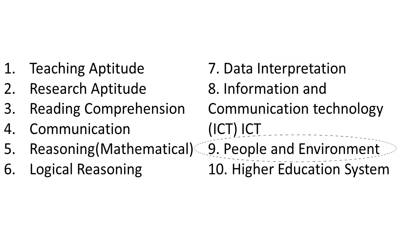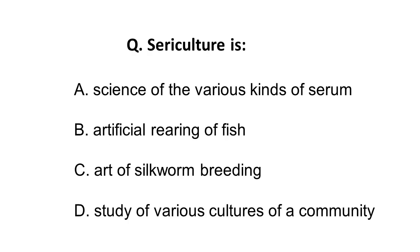The first question is: sericulture is — Option A: science of various kinds of serum; Option B: artificial rearing of fish — this is not sericulture, artificial rearing of fish is pisciculture; Option C: art of silkworm breeding; and Option D: study of various cultures of the community.